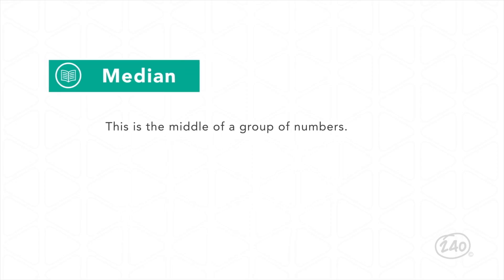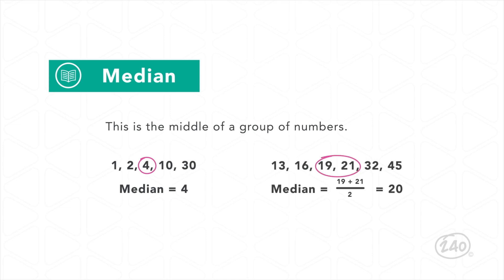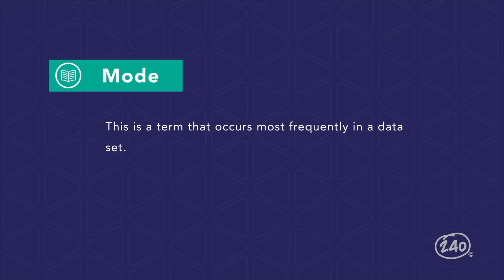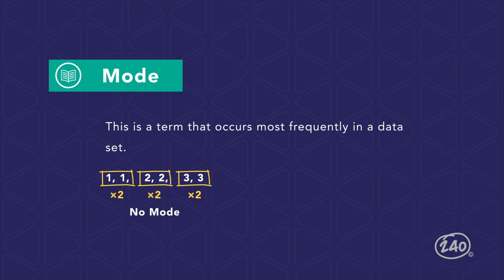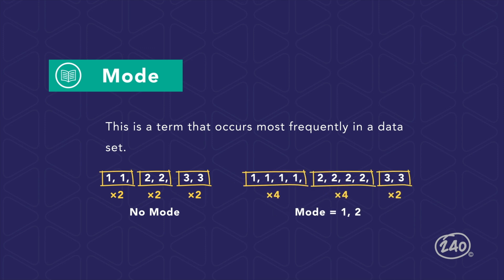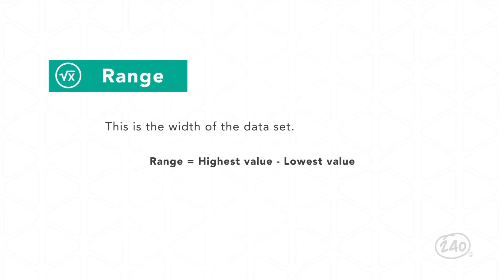To find the median, start by ordering the numbers from least to greatest. In a set with an odd number of terms, the median is the middle value. When there is an even number of terms, the median is found by calculating the mean of the middle two numbers. The mode is the term that occurs most frequently in a data set. Some sets have no mode when all terms share the same frequency; some sets have more than one mode. The range is the difference between the highest and lowest data values — the greater the range, the more spread out the data is.